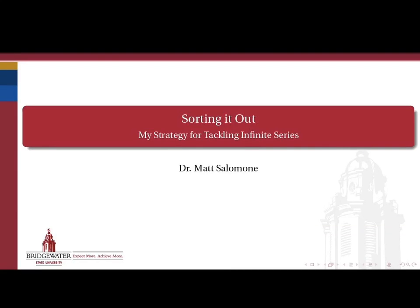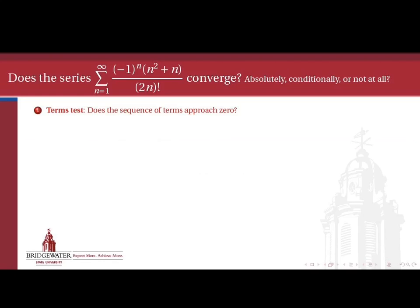In this video, we'll look at one complete example of how to use our sorting hat technique to assess whether an infinite series of real numbers is convergent or divergent. We're going to work on this example: the summation of negative 1 to the n times n squared plus n, all over the quantity 2n factorial. Is this series convergent absolutely, convergent conditionally, or divergent?